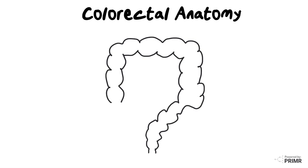It's a lot easier to understand colorectal cancer treatment when you first understand colorectal anatomy. The colon is a question mark shaped tube organ that absorbs water and nutrients from food before they leave the body through the anus. It is split up into several parts.